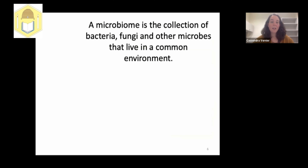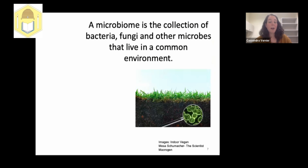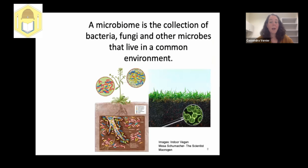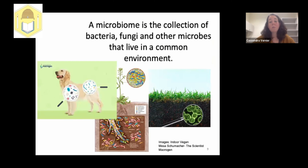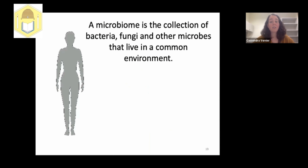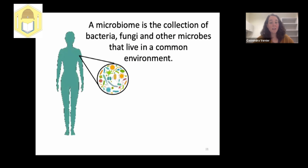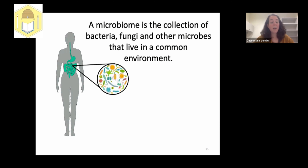A microbiome is a collection of bacteria, fungi, and other microbes that live in a common environment. This environment can be abiotic, such as soil or water, or biotic — for example, microbes live on plant leaves and roots. In animals, microbes live both in and on their bodies. In humans, microbial cells actually outnumber human cells 10 to 1, and distinct microbiomes are found on different parts of our bodies — skin, nose, mouth, and gut.